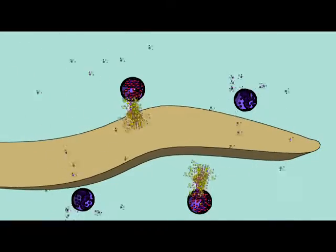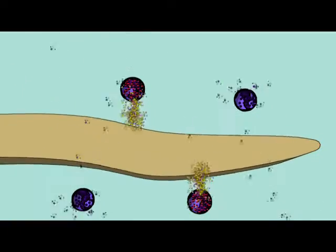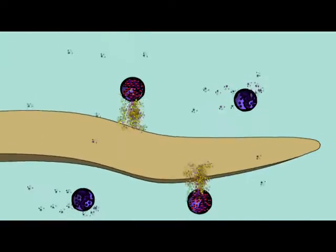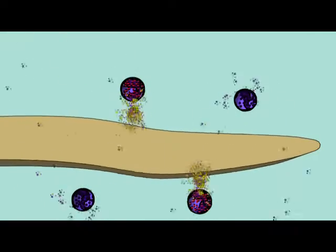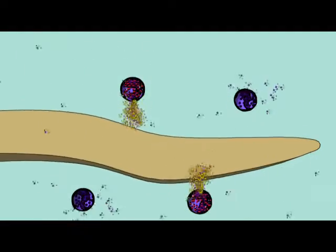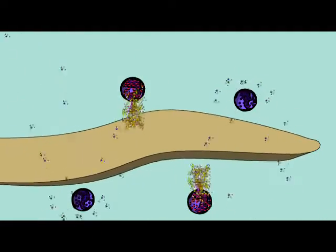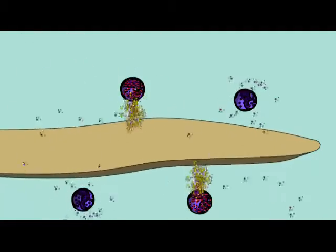Basophils and eosinophils are both elevated by some of the same stimuli, such as parasitic infections and allergies. They can be found in the same tissues, such as those around a parasite infection.